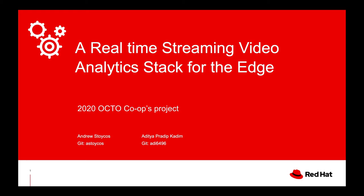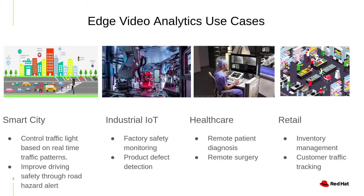Why is this important? There's a bunch of use cases. We wanted to highlight the ones involving a smart city where we can make decisions based on a video camera at a traffic light — such as someone ran a red light and we need to give them a ticket, or there's a blind person at the crosswalk and we may need to trigger the light.